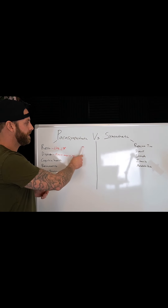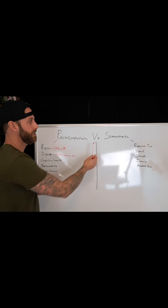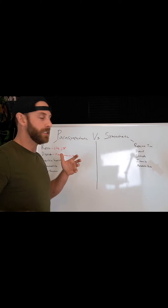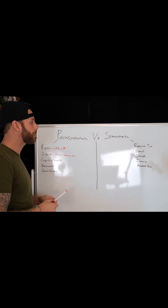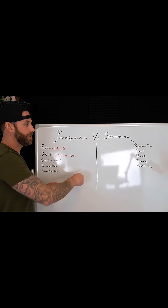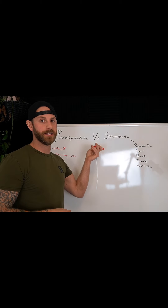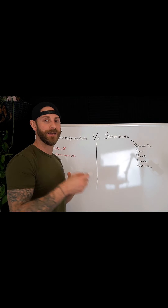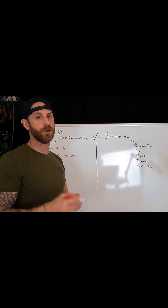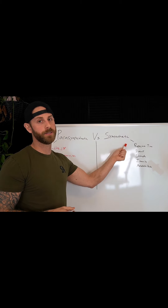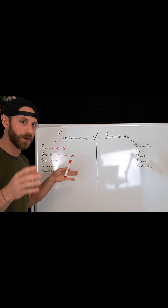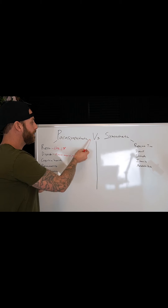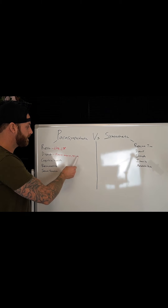Improving stress management will help shift you toward the parasympathetic state. It's still important to have sympathetic activity — you don't want to completely suppress it with supplements, THC, or other things. You also need to understand allostasis — your body can find homeostasis amid stress — but when your allostatic load gets too high, you become sympathetic dominant. The steps mentioned — journaling, yoga, and similar practices — can really help improve the parasympathetic state.